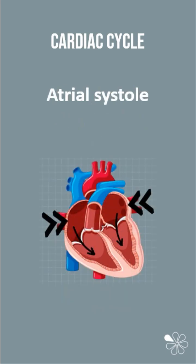In atrial systole the atria contract increasing pressure inside them. This forces any remaining blood from the atria into the ventricles. As the pressure in the ventricles rises it exceeds atrial pressure causing the AV valves to close. The semi-lunar valves remain closed preventing blood from leaving the ventricles.